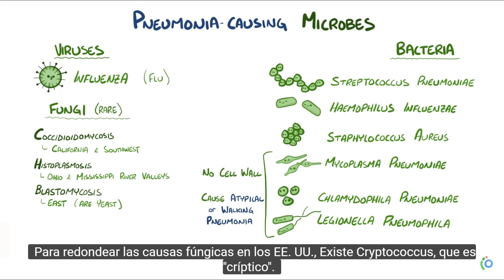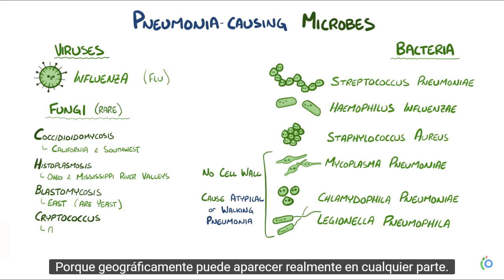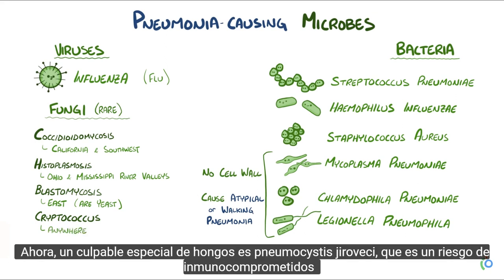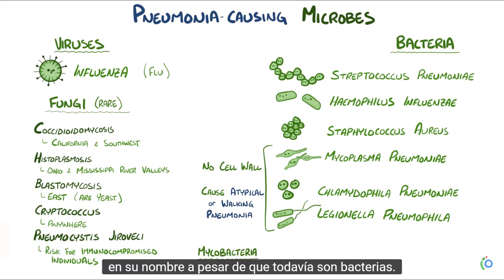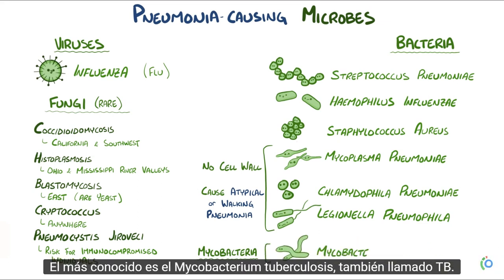To round out the fungal causes in the US, there's Cryptococcus, which is cryptic because geographically it can pop up really anywhere. One special fungal culprit is Pneumocystis jirovecii, which is a risk for immunocompromised individuals. Finally, there's mycobacteria, which are slow-growing like fungi — hence the 'myco' in their name even though they're still bacteria. The most well-known is Mycobacterium tuberculosis, also just called TB.